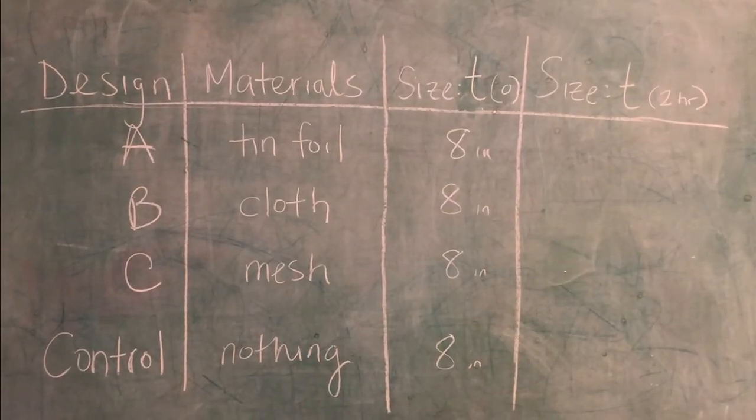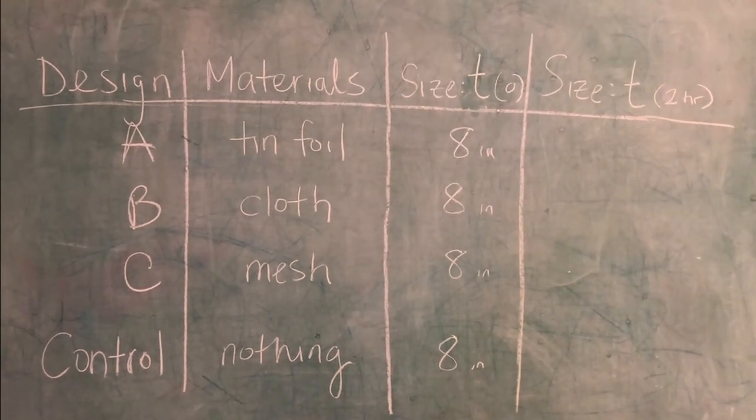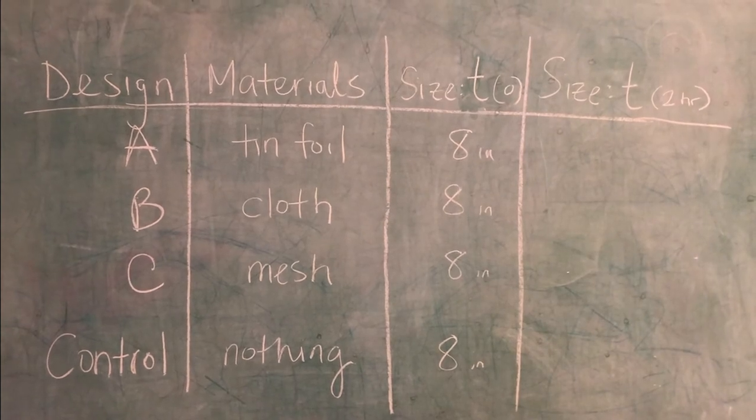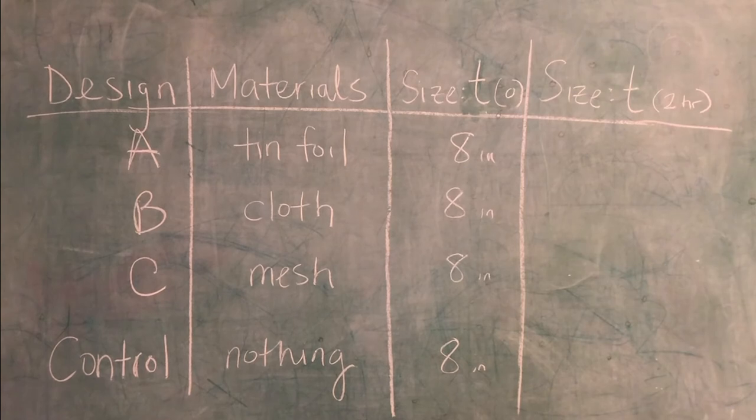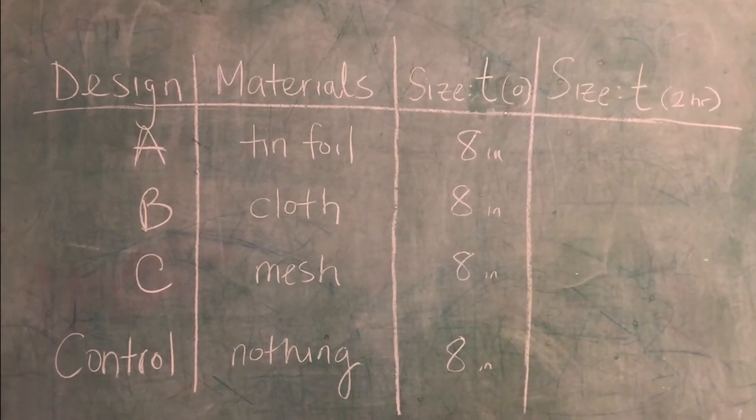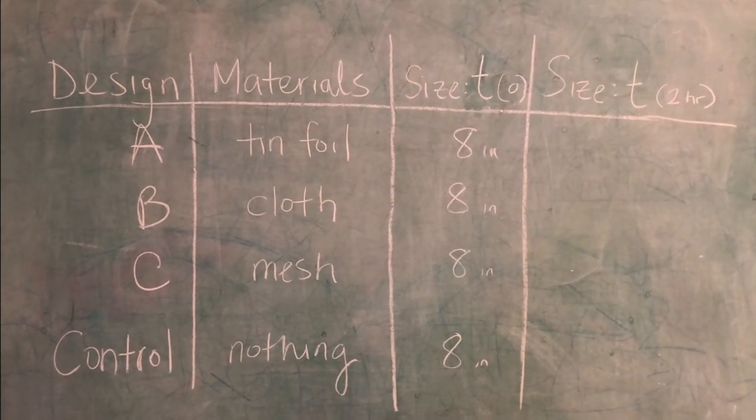Finally it's time to look at our results. On my data sheet I've written each of my designs A, B, and C as well as the control. I've also noted the size of the snowballs were when I first started the experiment at t0. Now it's time for us to fill in what size our snowballs are after two hours.